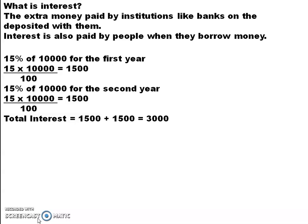A person borrowed Rs. 10,000. For the first year we have to pay an extra amount — that is 15% of 10,000. 15% means 15/100, and 'of' means multiply, so 15/100 × 10,000 = 1,500. For simple interest, you are going to add the same amount for the second year also. First year: 1,500. Second year: 1,500. Total is 3,000. If it was 3 years, again you would add 1,500.